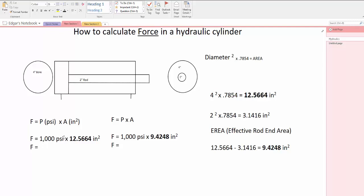Let's say you have 1,000 psi and you multiply by the area on the bore side—that gives you 12,566.4 pounds. Force is measured in pounds.